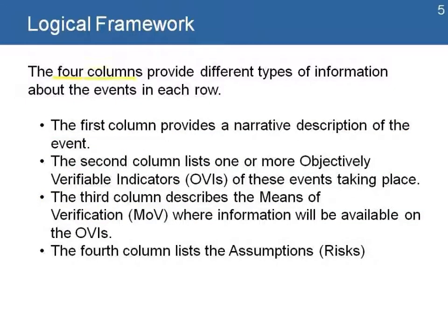The four columns provide different types of information about events in each one of the rows. The first column provides a narrative description of the event. The second column lists one or more objectively verifiable indicators, or OVIs, that are taking place. The third column describes the means of verification of the OVIs. And the fourth column lists all the assumptions and risks for each one of the events.